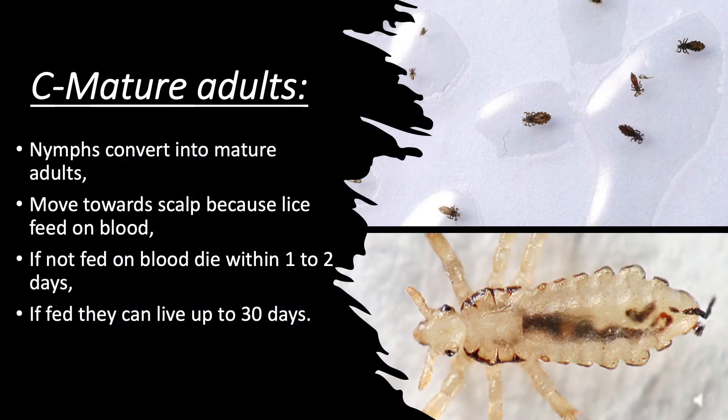The third type of head lice is mature adults. Nymphs convert into mature adults and move toward the scalp because lice feed on blood. If not fed on blood, they die within 1 to 2 days; if fed, they can live up to 30 days.